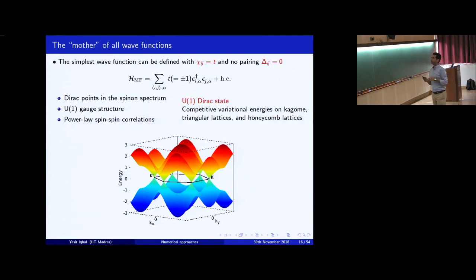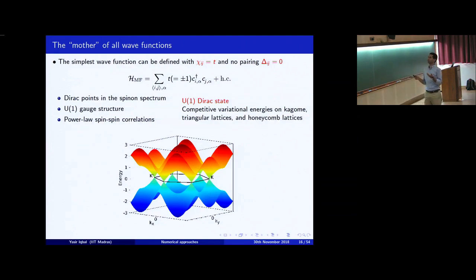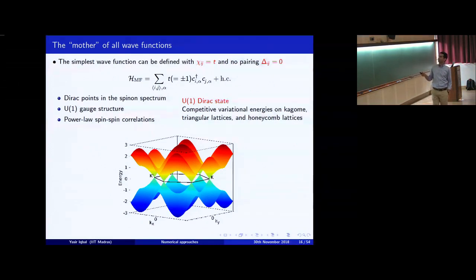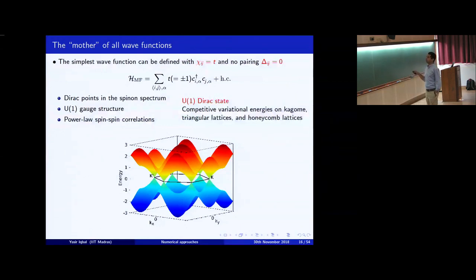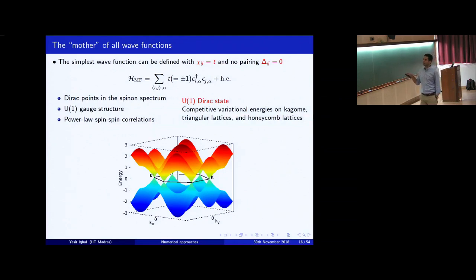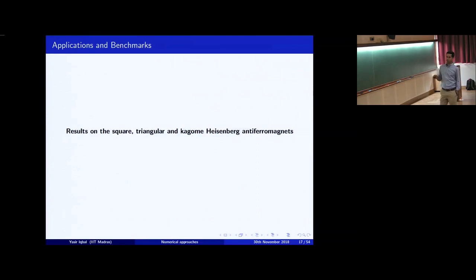The mother of all wave functions is that on the triangular lattice, Kagome lattice, honeycomb lattice and other lattices, a simple tight-binding nearest-neighbor hopping Hamiltonian with a certain sign structure — giving either π-flux or zero flux on the plaquettes — turns out to give a remarkably good energy. This wave function has no variational parameters; t can be set to ±1 as the unit. This state is a U(1) Dirac spin liquid on the triangular and Kagome lattices, with Dirac points — for example four Dirac points on the square lattice — and power-law spin-spin correlations. On the Kagome lattice, they go as 1/r^4. This is an algebraic liquid.